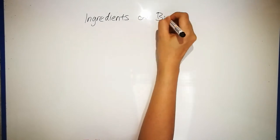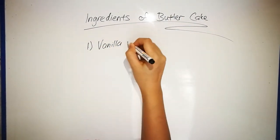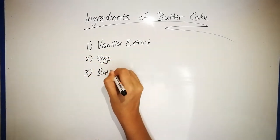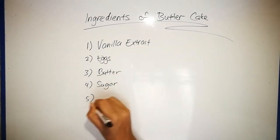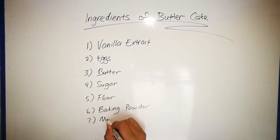Now what about butter cake? Well, the ingredients are vanilla extract, eggs, butter, sugar, flour, baking powder, and milk.